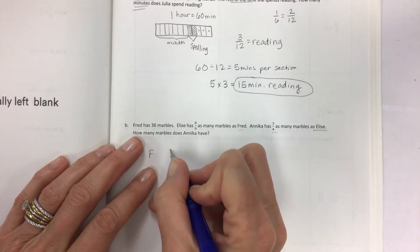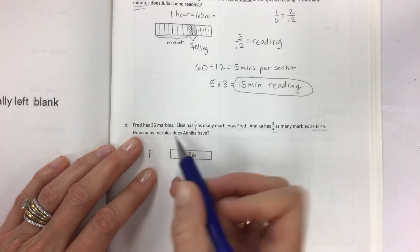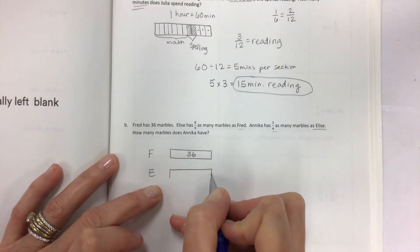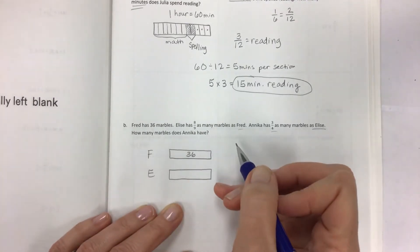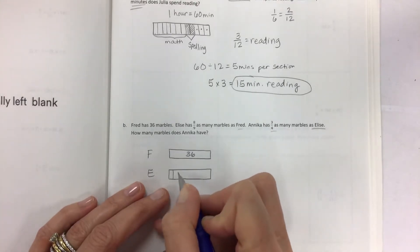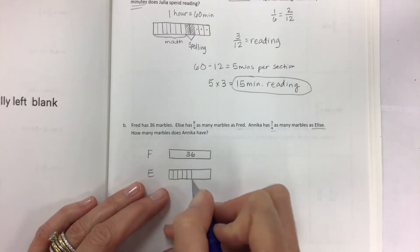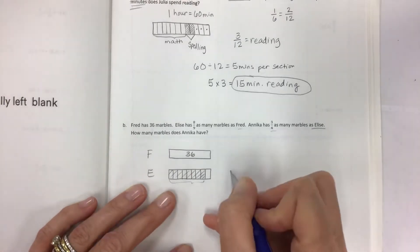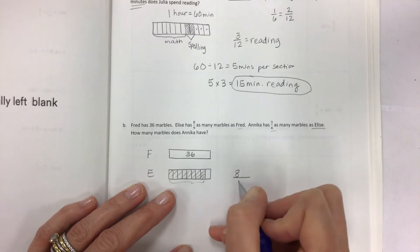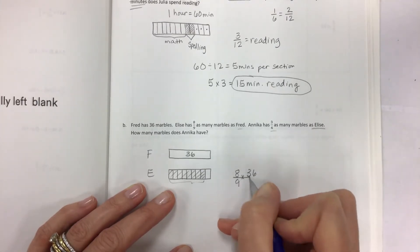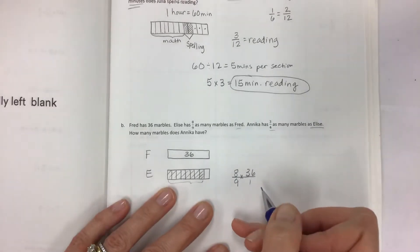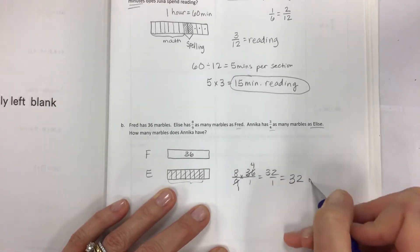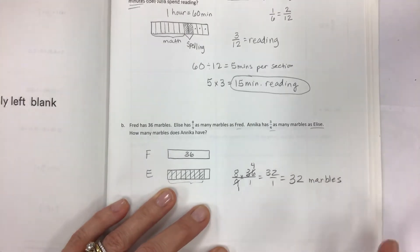Now that we have read, we can draw a little bit. Fred, we know the whole. He has 36, no question about that. Elise has not 36. She has eight ninths as many marbles as Fred. So essentially what we're doing is three, four, five, six, seven, eight, nine. These are Elise's marbles. She has eight ninths as many. So you can do eight ninths of 36 and create this, multiplying by fractions, simplify and get the number of marbles that Elise has.